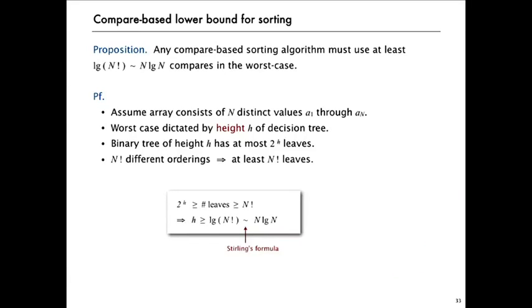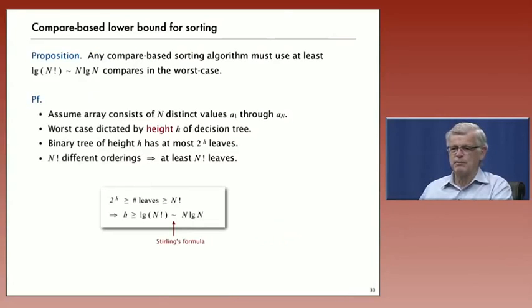And those observations give us the lower bound. 2 to the H has to be greater than or equal to the number of leaves. And the number of leaves has to be greater than or equal to N factorial. So that implies the height of the tree has to be greater than or equal to log base 2 of N factorial, which is proportional to N log N by Sterling's formula.